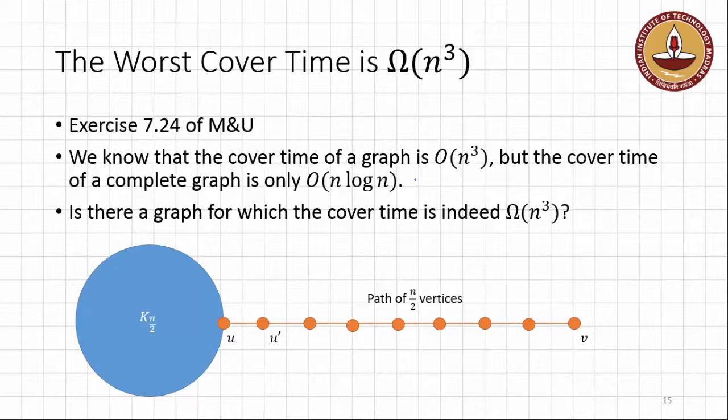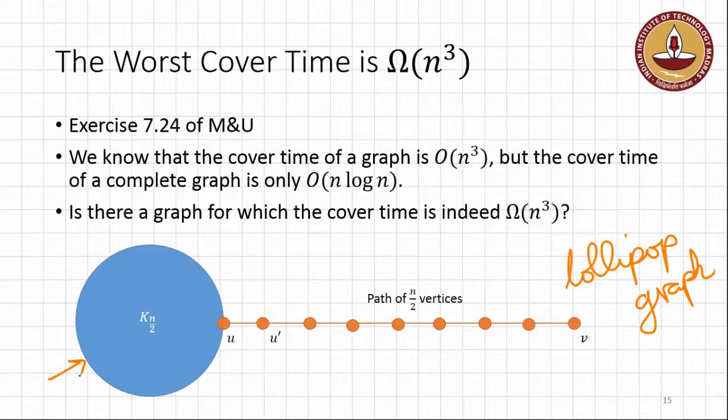And interestingly, the graph that displays such a large cover time has this very nice structure called the lollipop graph. The lollipop graph has two parts to it. There is the complete graph part, which is especially about half the vertices are all completely connected to each other. So this is the K_{N/2}. And then we have the handle of the lollipop, which is another N/2 vertices, but now connected linearly.